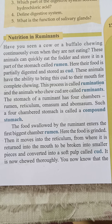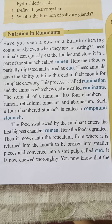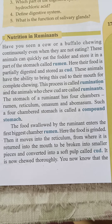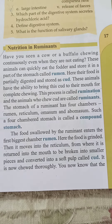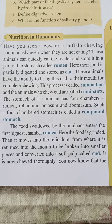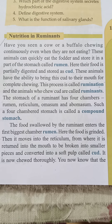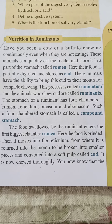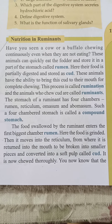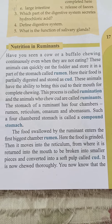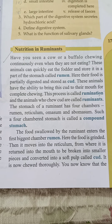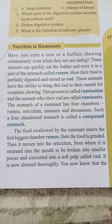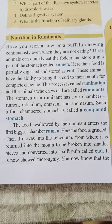یہاں their food is partially digested and stored as cud — food بہت ہلکا سا digest ہو جاتا ہے، چھوٹے ٹکڑوں میں تقسیم ہو کر store ہو جاتا ہے جسے cud کہتے ہیں۔ These animals have the ability to bring this cud back to their mouth for complete chewing۔ Ruminants میں یہ ability ہے کہ وہ اس cud کو واپس منہ میں لے آتے ہیں — پہلے جلدی سے موٹا موٹا چبایا اور نگل لیا، پھر بعد میں واپس منہ میں لا کر اچھی طرح چباتے ہیں۔